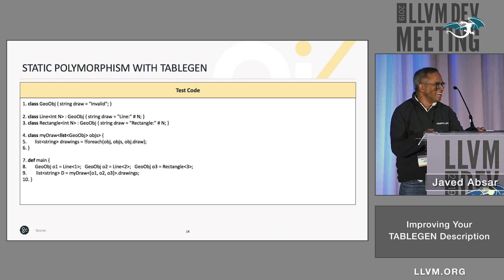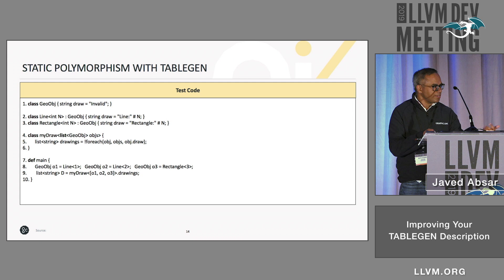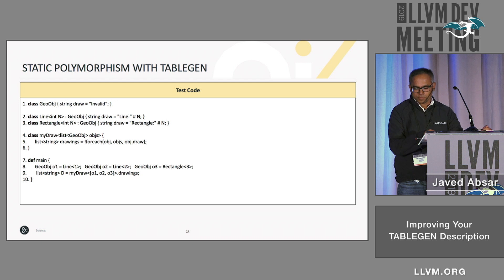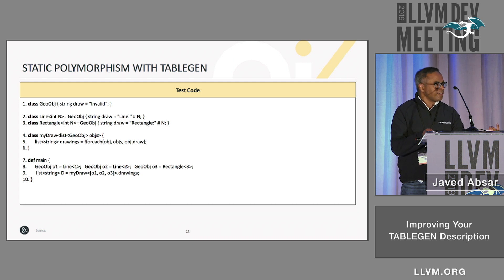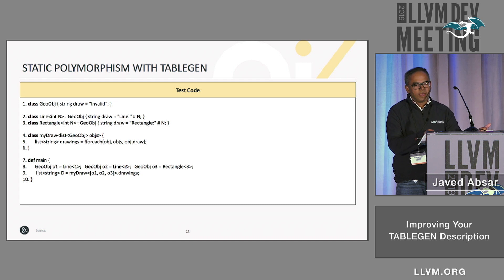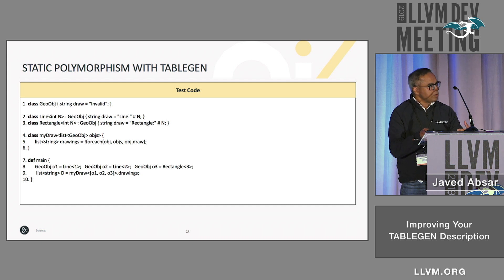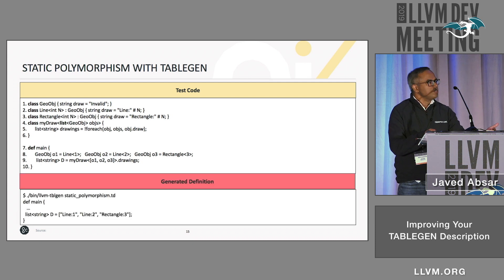Can you do compile-time polymorphism with TableGen — as in have a common interface which you can use across different subtypes? Yes, you can, and here is an example. You define a geometric object which has a draw field. Then you define a line and a rectangle, which are subtypes of geometric object, and they have their own draw variables. The key is that you can have a class where you pass a list of geometric objects, and TableGen is smart enough to invoke the right draw functions. If you run TableGen, it will print the line and the rectangles you've passed through it.